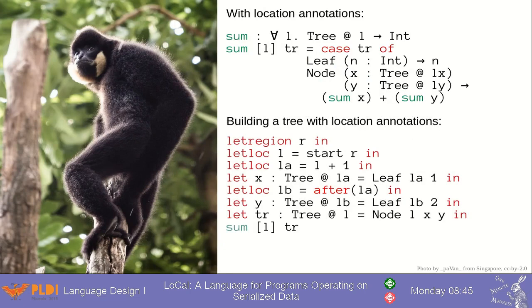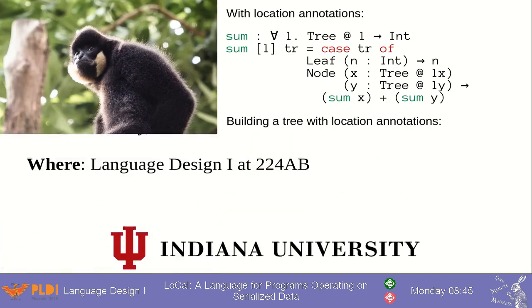When building the tree, types symbolically track how values are written to memory. Locale allows programmers to use pattern matching and recursion to operate directly on serialized data in a type-safe way.